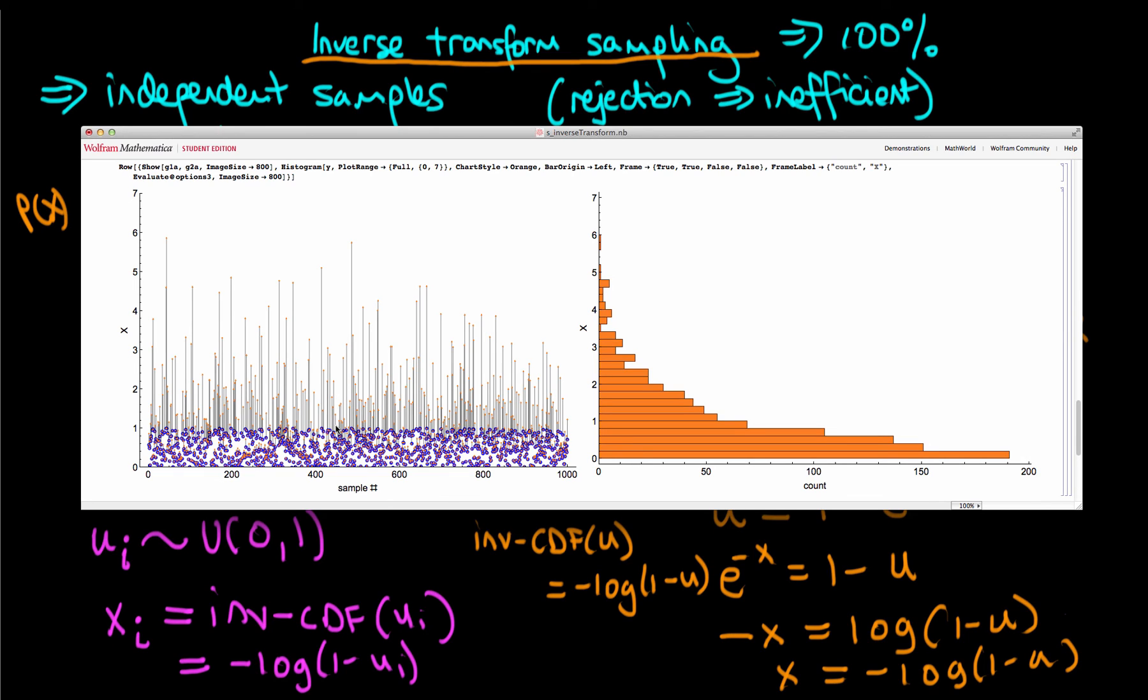One thing that I want to stress about inverse transform sampling is that each of these orange crosses is generated from one sample for u. In other words, we are not rejecting any of our samples. We've got 100% efficiency with inverse transform sampling. So in a way it's an improvement on rejection sampling.